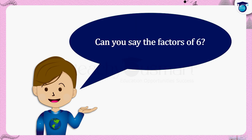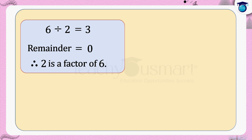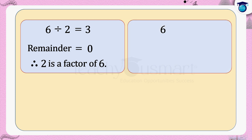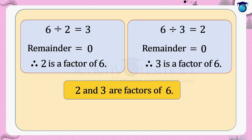Can you say the factors of 6? When 6 is divided by 2 there is no remainder, therefore 2 is a factor of 6. Similarly, when 6 is divided by 3 the remainder also equals 0, therefore 3 is a factor of 6. Hence 2 and 3 are factors of 6, or we can write 6 equals 2 multiplied by 3.